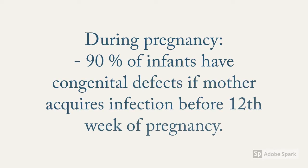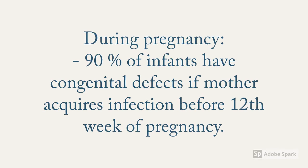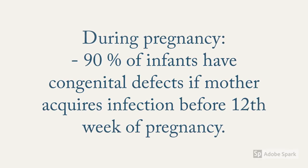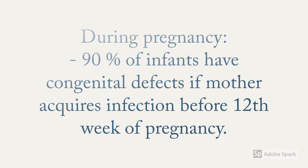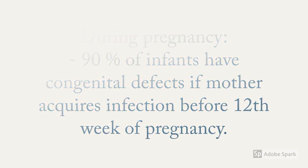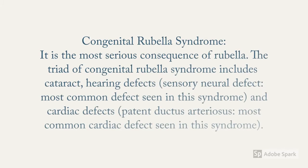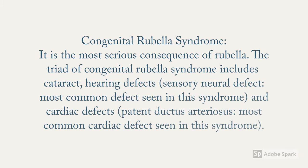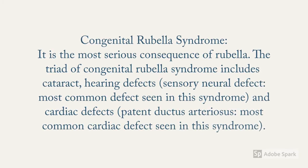During pregnancy, 90 percent of infants have congenital defects if the mother acquires infection before the 12th week of pregnancy, or within the first trimester. As the trimesters progress, the infection gets milder. By the third trimester, the infection won't cause any defect to the fetus or the newborn. Congenital rubella syndrome is the most serious consequence of rubella occurring from infection in the first trimester.